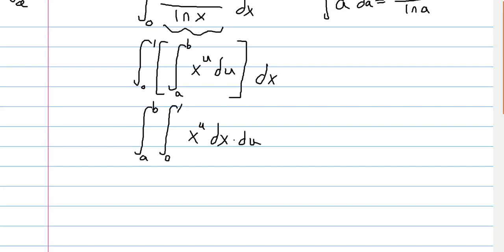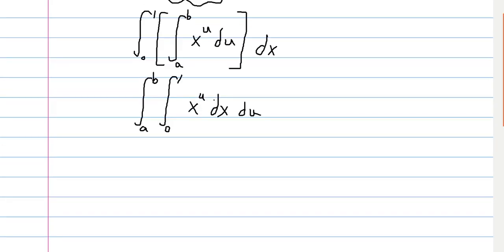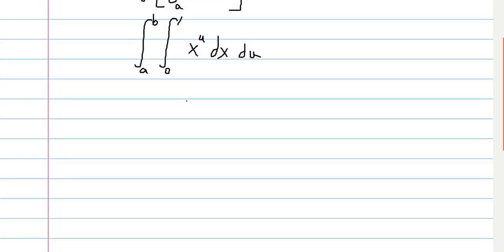And so now we just have a definite integral in terms of a polynomial because x is our base and x is our integrating variable. This is simple to evaluate and we just get one divided by u plus one.